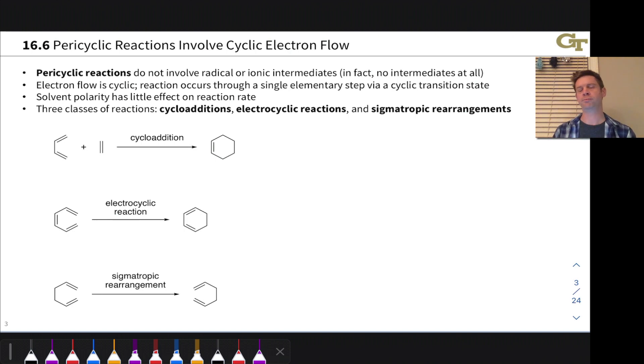Because there are no charged intermediates in the reaction mechanism, these reactions tend to be insensitive to the polarity of the solvent. Changing the polarity of the solvent doesn't stabilize or destabilize any reactive intermediates or any transition states—there's very little charge buildup in most pericyclic transition states. There are three major classes of pericyclic reactions: cycloadditions, electrocyclic reactions, and sigmatropic rearrangements.